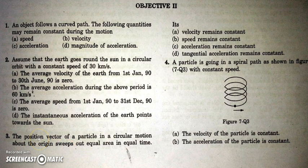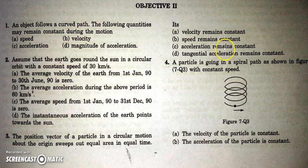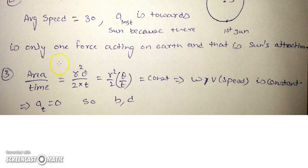In the next question, the position vector of a particle in circular motion about the origin sweeps out equal area in equal intervals of time. Its velocity remains constant — no, in circular motion velocity can't be constant. Its speed remains constant — yes. Acceleration remains constant — no, it will change in direction. Tangential acceleration remains constant — the magnitude of tangential acceleration will remain constant.